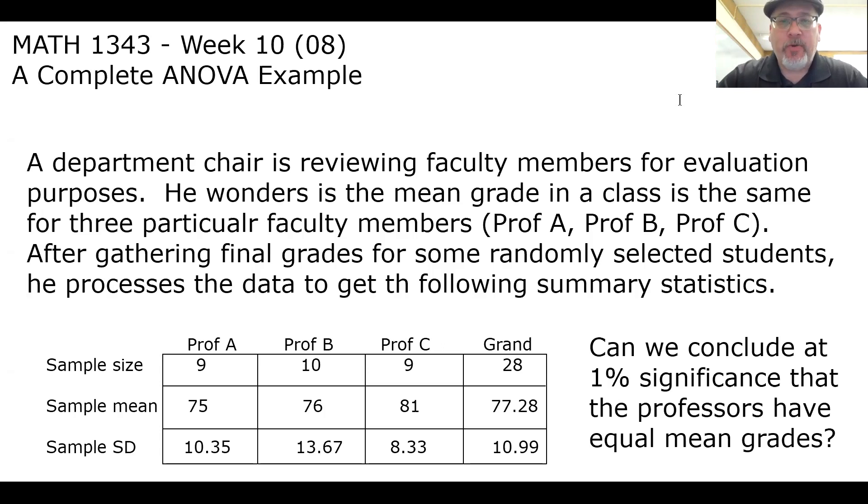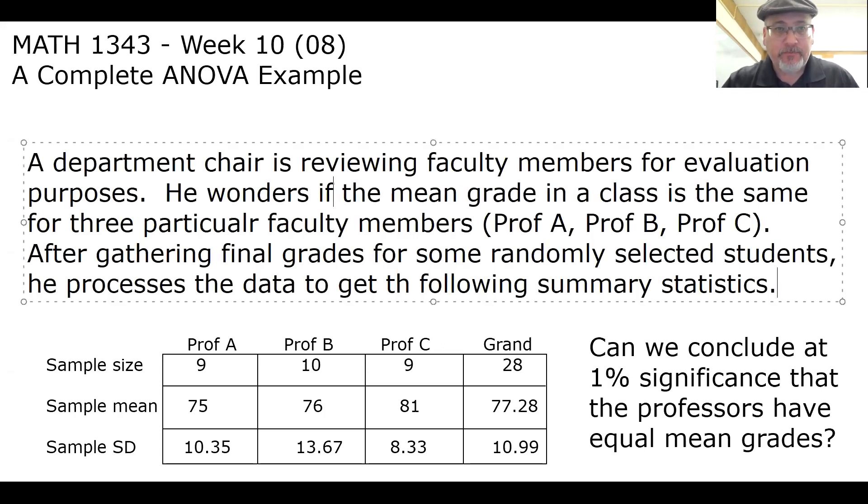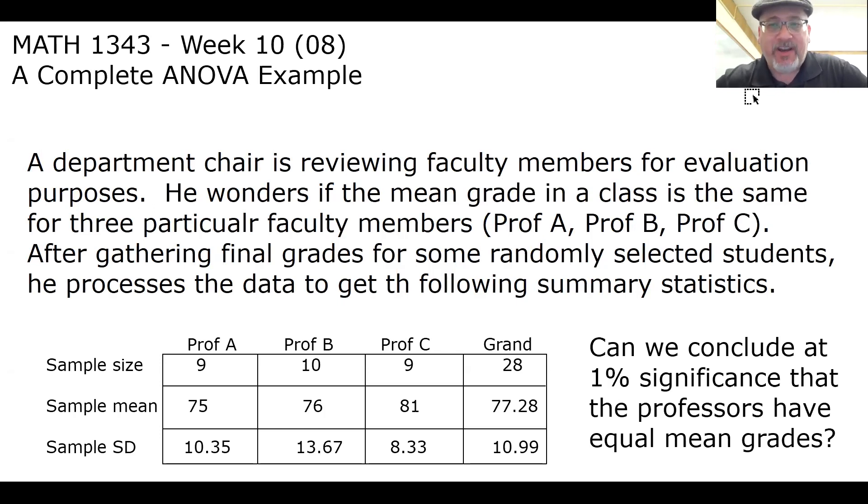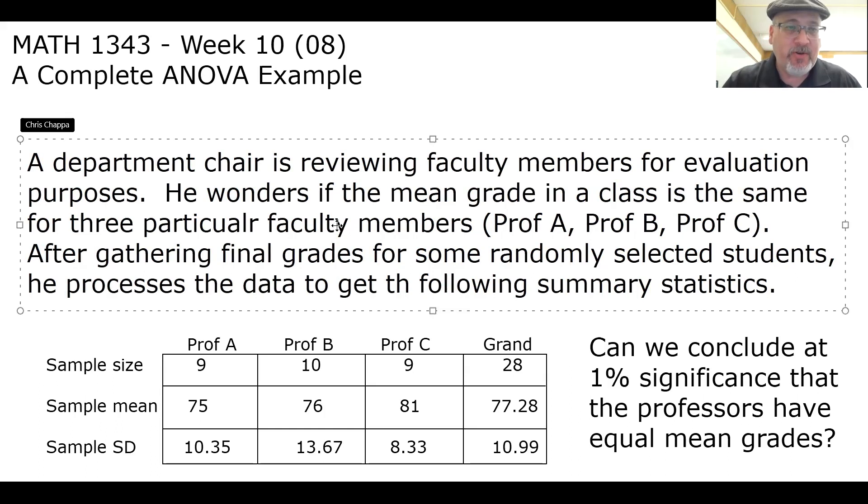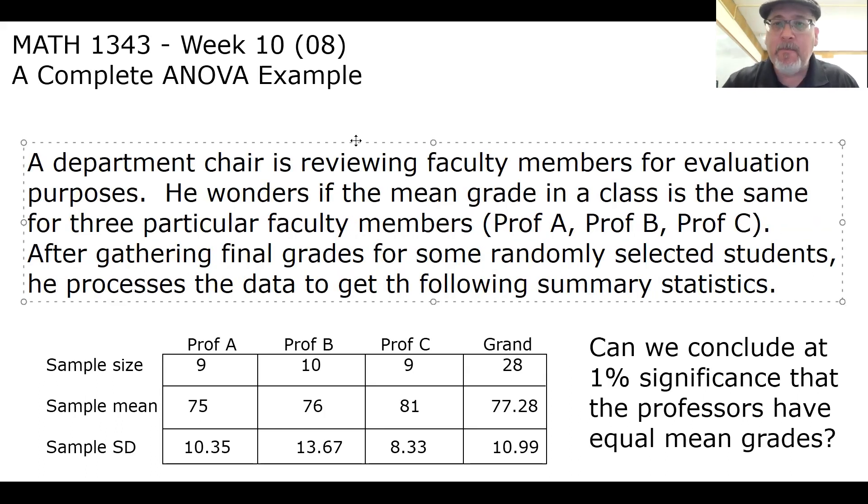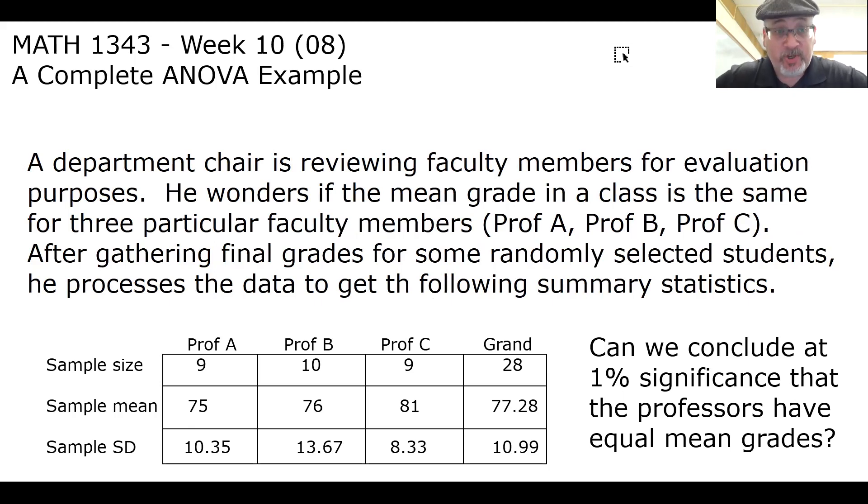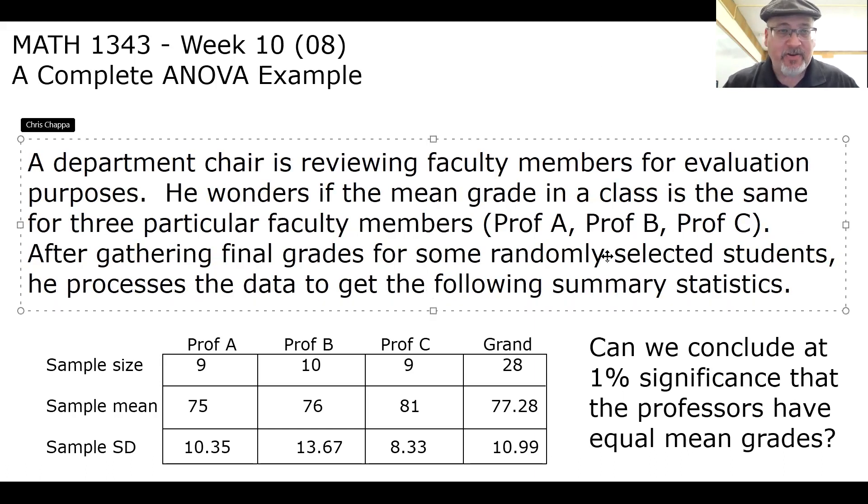Let's take a look at this example. A department chair is reviewing faculty members for evaluation purposes. He wonders if the mean grade in a class is the same for three particular faculty members: Professor A, Professor B, and Professor C. After gathering final grades for some randomly selected students, he processes the data to get the following summary statistics. And the question is, can we conclude at 1% significance that the professors have equal mean grades?